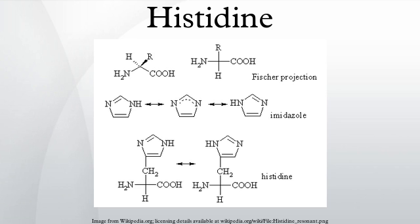Certain amino acids can be converted to intermediates of the TCA cycle. Carbons from four groups of amino acids form TCA cycle intermediates: α-ketoglutarate, succinyl-CoA, fumarate, and oxaloacetate. Amino acids that form α-ketoglutarate are glutamate, glutamine, proline, arginine, and histidine.